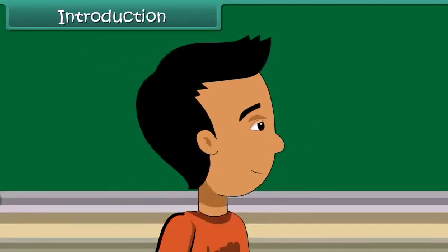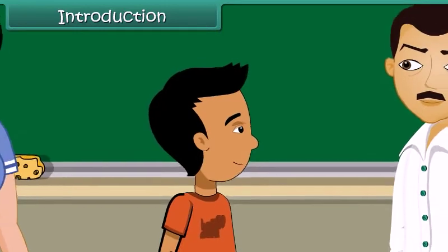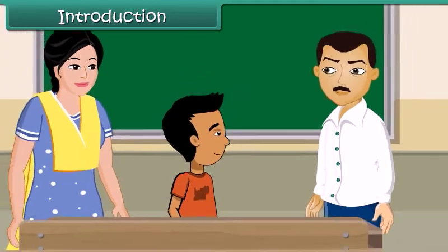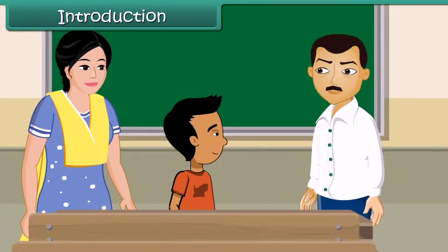Ramesh is a bright boy, eight years of age. He studies in a government school. Today he has accompanied his mother to the parent-teacher meeting. The teacher has one complaint: Ramesh takes leave frequently, and as a result his class and homework are incomplete. If he continues to be irregular at school, he may have to repeat the class.